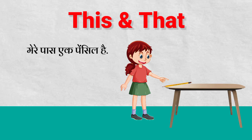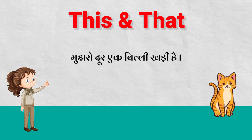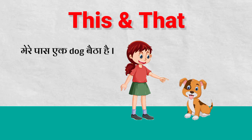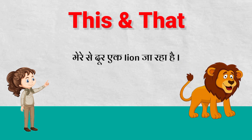Ek aur example lete hai. Mere paas hai ek pencil. So what will I write? 'This is a pencil.' Mere se door ek cat khadi hai. So what will I write? 'That is a cat.' Mere paas ek dog baitha hai. What will I write? 'This is a dog.' Mere se door ek lion ja raha hai. So mein kya likhungi? 'That is a lion.' Very good, children.